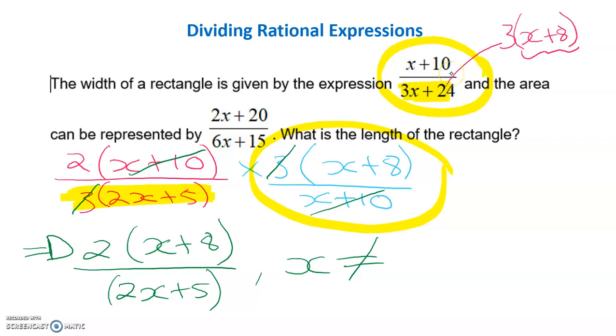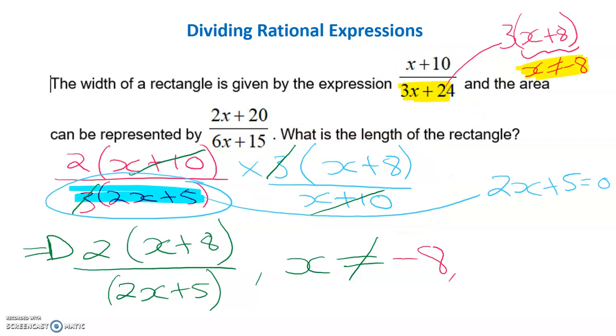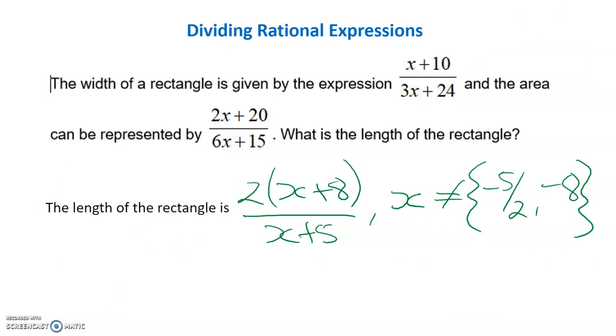Here, that cannot equal 0, so therefore x cannot equal negative 8. So negative 8 is one of our restrictions. And from this one here, we have 2x equaling negative 5, so x is negative 5 on 2. So the overall answer to the problem is the length of the rectangle is 2 by x plus 8 over 2x plus 5, where x cannot equal negative 5 on 2 or negative 8. This must be included for contextual problems, because if x was one of these values, the solution would not exist.